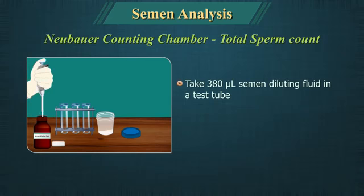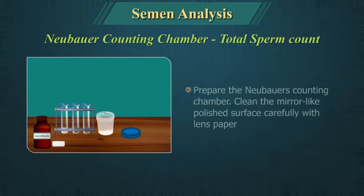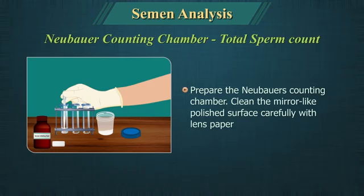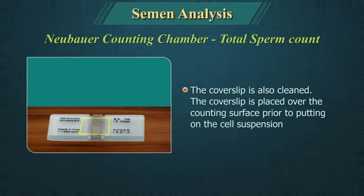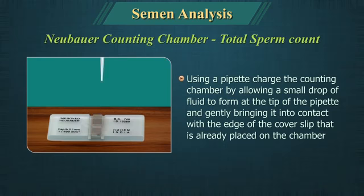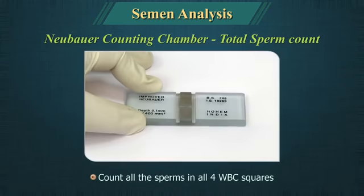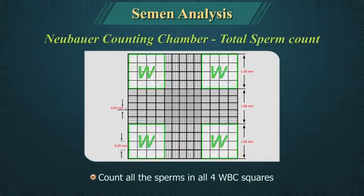Total sperm count using Neubar's counting chamber: Take 380 microlitres of semen diluting fluid in a test tube, add 20 microlitres of well-mixed liquefied semen sample to it. Prepare the Neubar's counting chamber by cleaning the surface carefully with lens paper; the cover slip should also be cleaned and placed over the counting surface prior to putting the cell suspension. Using a pipette, charge the counting chamber by allowing a small drop of fluid to form at the tip and gently bringing it into contact with the edge of the cover slip already placed on the chamber. Allow the Neubar chamber to stand covered for 5 minutes, then count all the sperms in the 4 WBC squares and calculate.